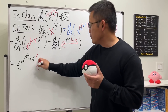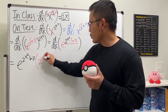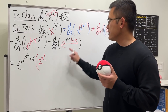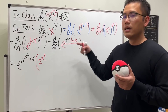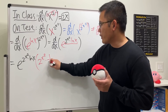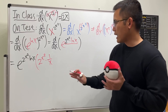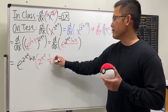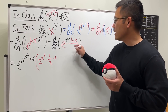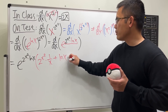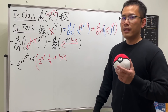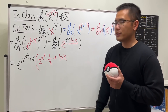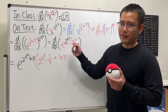Applying the product rule to the inside 2x² · ln x: we keep the first function, 2x², and multiply by the derivative of the second — the derivative of ln x is 1/x. Then we add the second function, ln x, multiplied by the derivative of the first function, 2x².